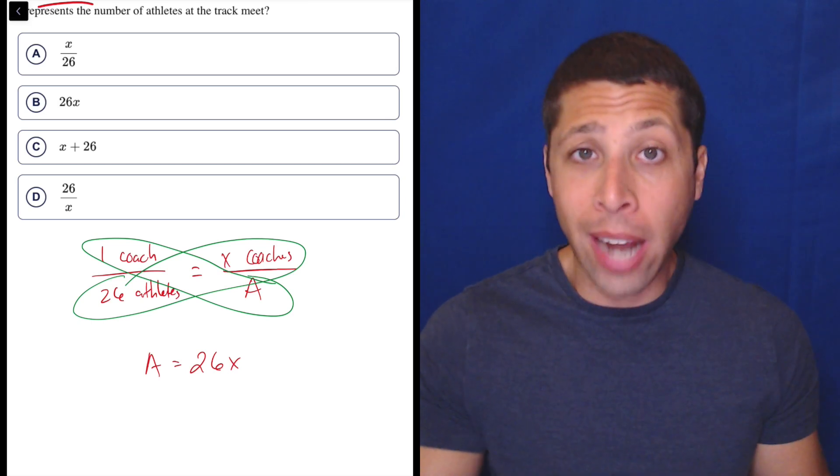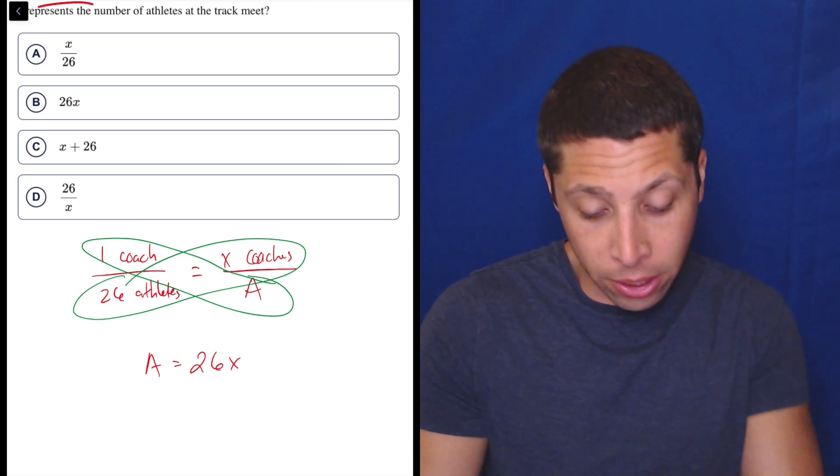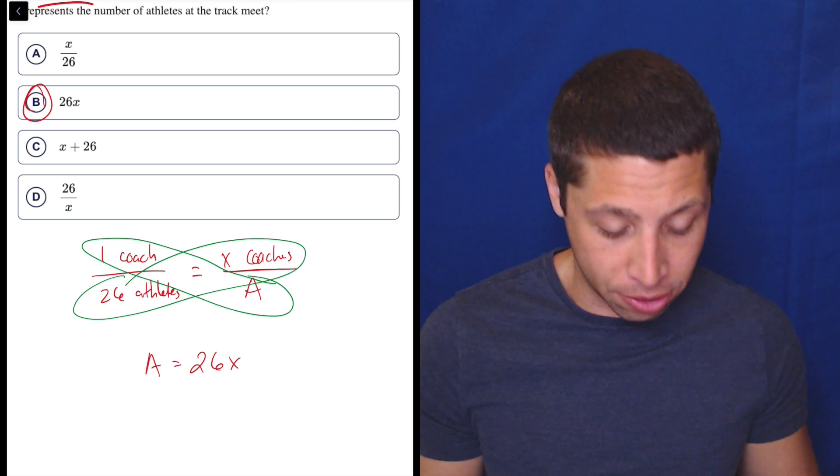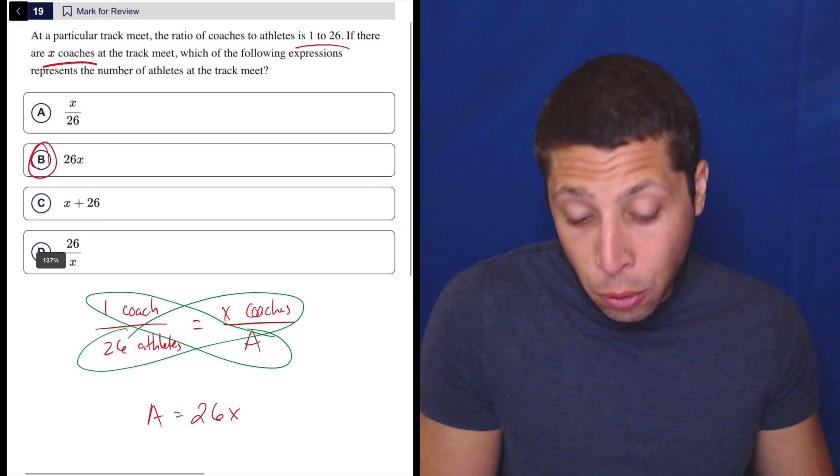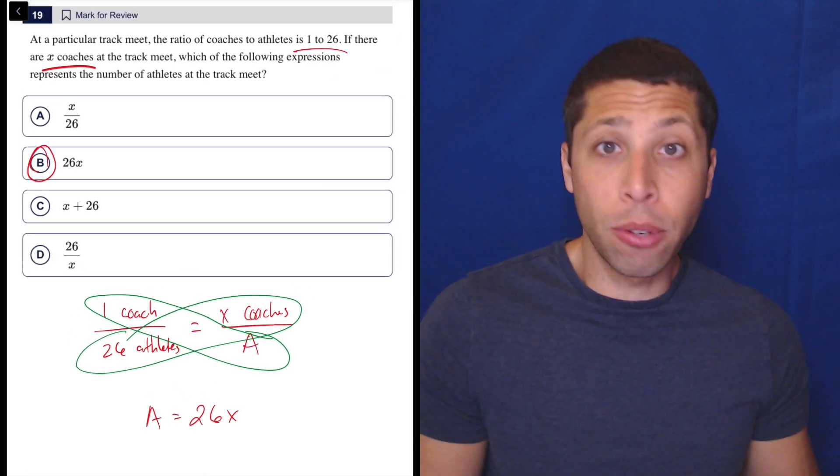So what do we want? We wanted A all by itself. We have A all by itself. And so there you go. 26X is the answer. So if you want to just think of it as a ratios question, there you go. You're done.